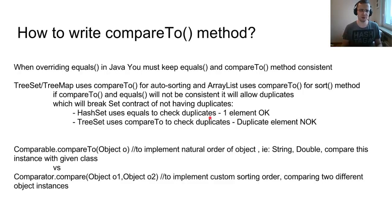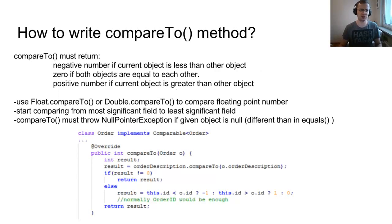If there is one element, it's okay. But the tree uses compareTo method to check the duplicates, so duplicate element will not be okay. CompareTo must return a negative number if current object is less than other object, zero if both are equal, and positive if its current object is greater than the other object. How to write the compareTo method? Use the Float.compareTo or Double.compareTo for comparing floating point numbers. Start comparing from the most significant field to least significant fields. CompareTo must throw the NullPointerException if given object is null. That is something different than equals method.